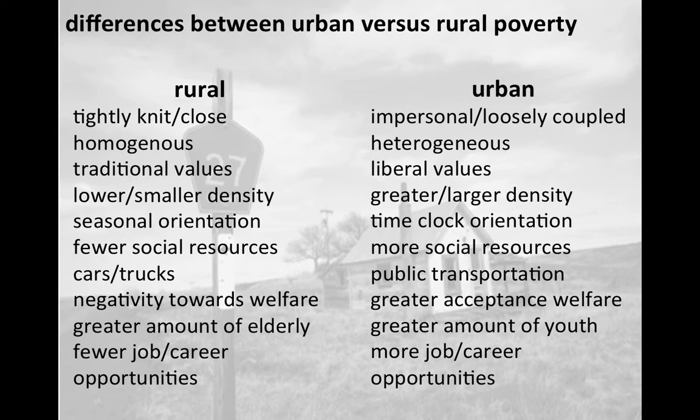In urban communities people are more impersonal and loosely coupled. When we look at demographic characteristics, rural areas are more homogeneous — meaning they are more alike, there's not as much diversity. With urban areas you do have a lot of demographic diversity. It's not unusual to find in a small town in Illinois there may not be any families of color living there.